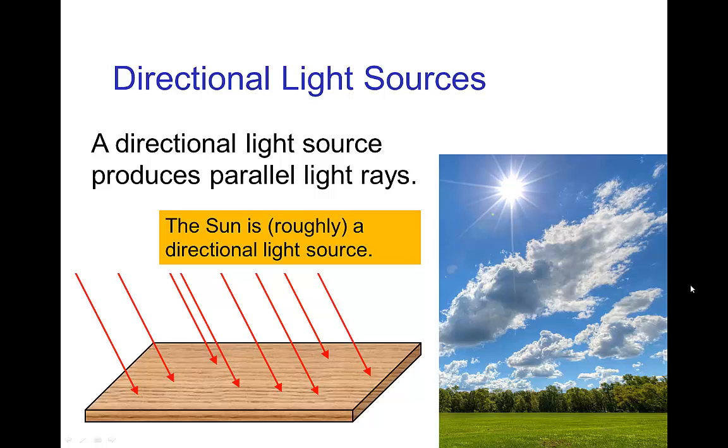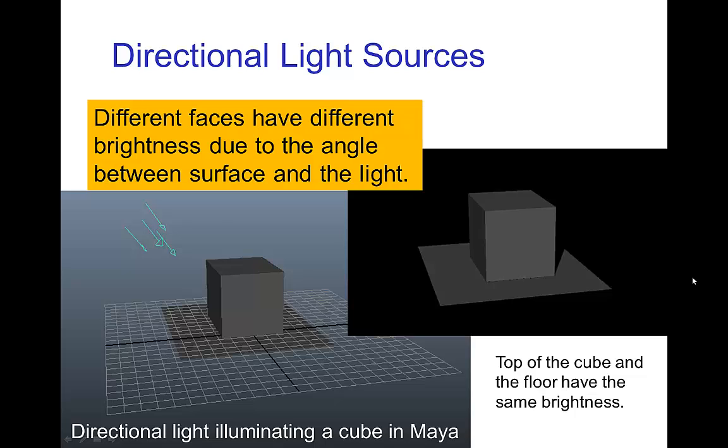The sun is roughly a directional light source. It's not exactly a directional light source, but it's a simple approximation to one. Now in computer graphics,